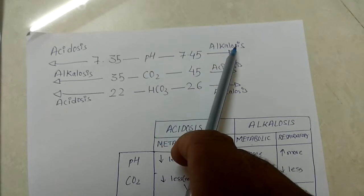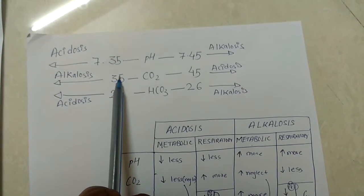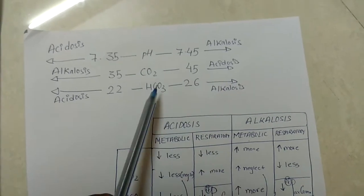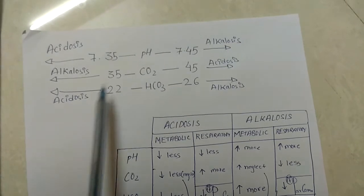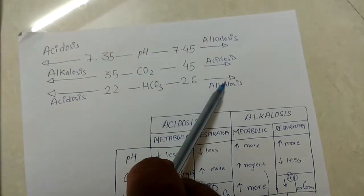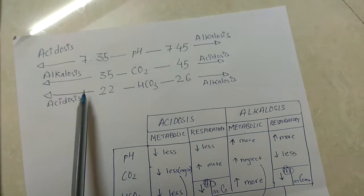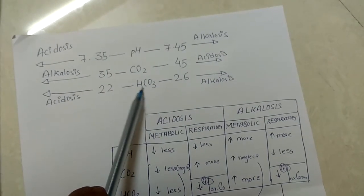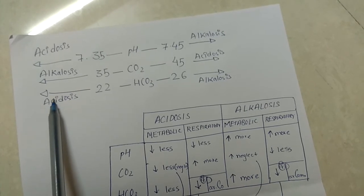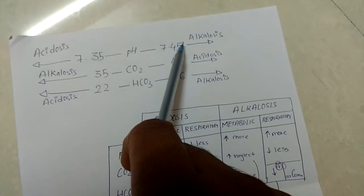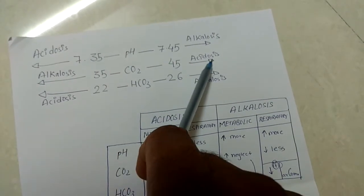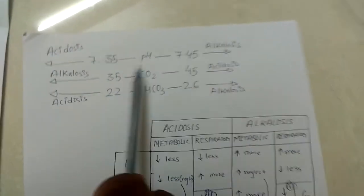To summarize: if pH is less than 7.35 it is acidosis; if pH is greater than 7.45 it is alkalosis. For CO2, if it is less than 35 it is alkalosis; if it is greater than 45 it is acidosis. Note that CO2 goes in the opposite direction to pH — on the greater side it is acidosis, on the lesser side it is alkalosis.